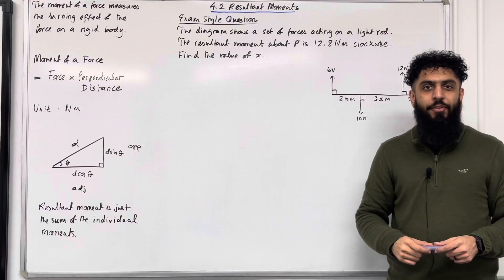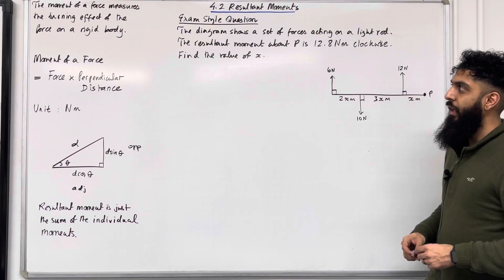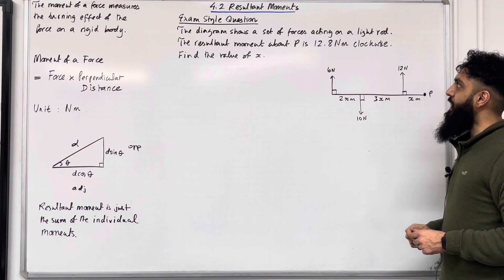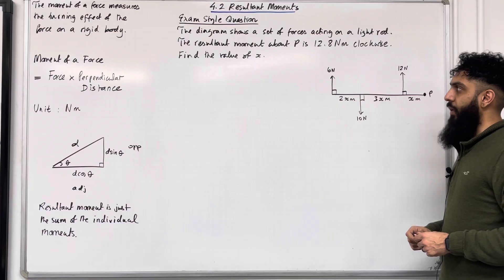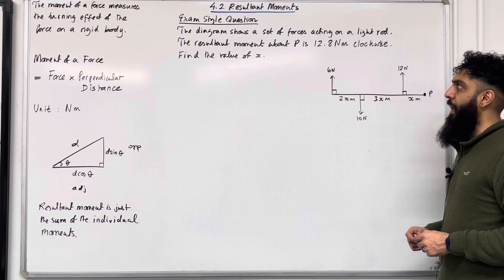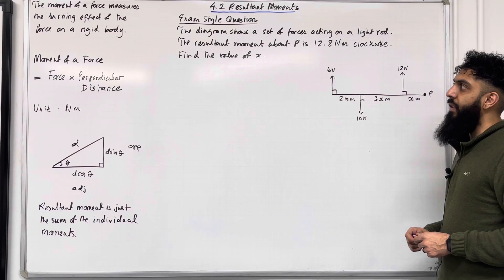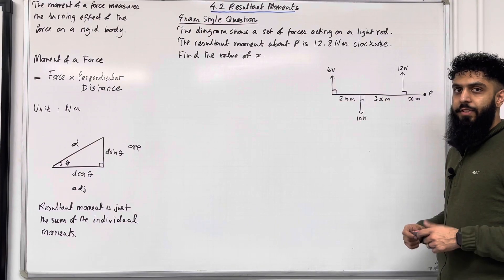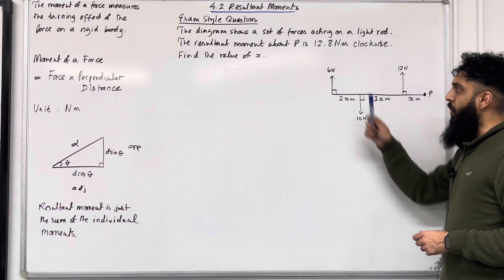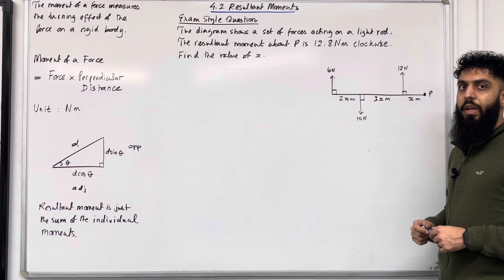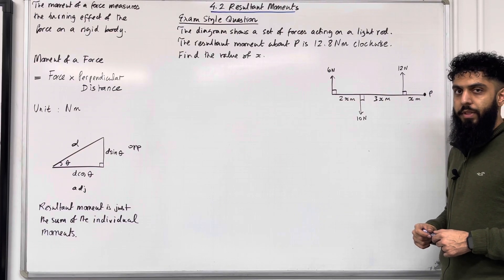Let's have a look at an exam-style question. The diagram shows a set of forces acting on a light rod. The resultant moment about P is 12.8 Newton meters clockwise. Find the value of x. We have three different forces, so we're going to calculate three different moments.